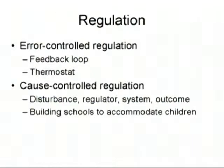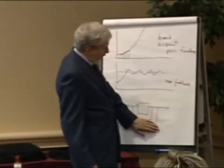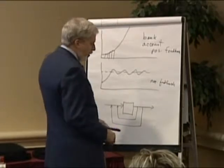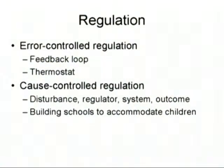Going on to regulation: there are many varieties, but two major varieties are error-controlled regulation and cause-controlled regulation. An example of error-controlled regulation is the feedback loop on a thermostat — you have a heater, you sense the temperature in the room, and you turn the heater on or off. The information is coming from the error: you compare the temperature in the room with the desired temperature. If it's set to 70 degrees and it's too hot, you turn it off; if it's too cold, you turn it on.